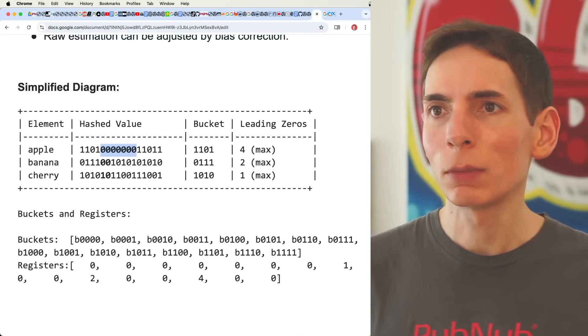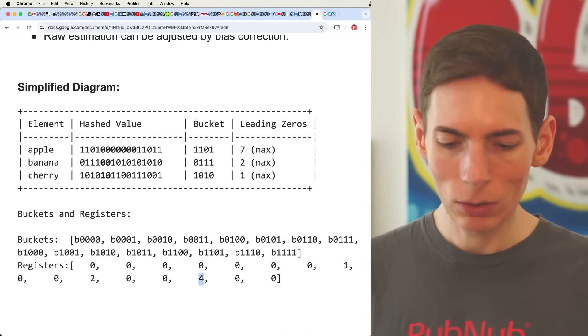There's seven trailing zeros. So that would actually look like this, and then we update the value there.